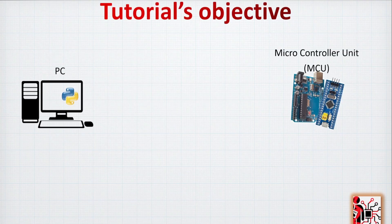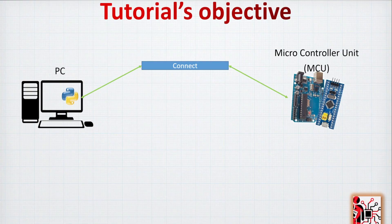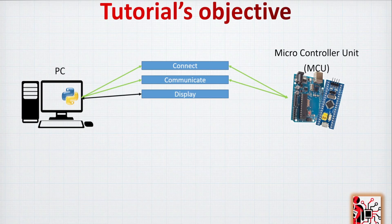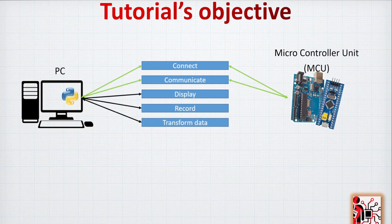Let's start with the tutorial objective. We'll have a PC and a microcontroller — whether Arduino, STM32, or PIC. We are going to connect, and then communicate — connecting over serial is one thing, communicating is a different thing. After that, using Python, we'll handle the display, record the data, and also transform it. This is the whole scope of what we are going to work with.